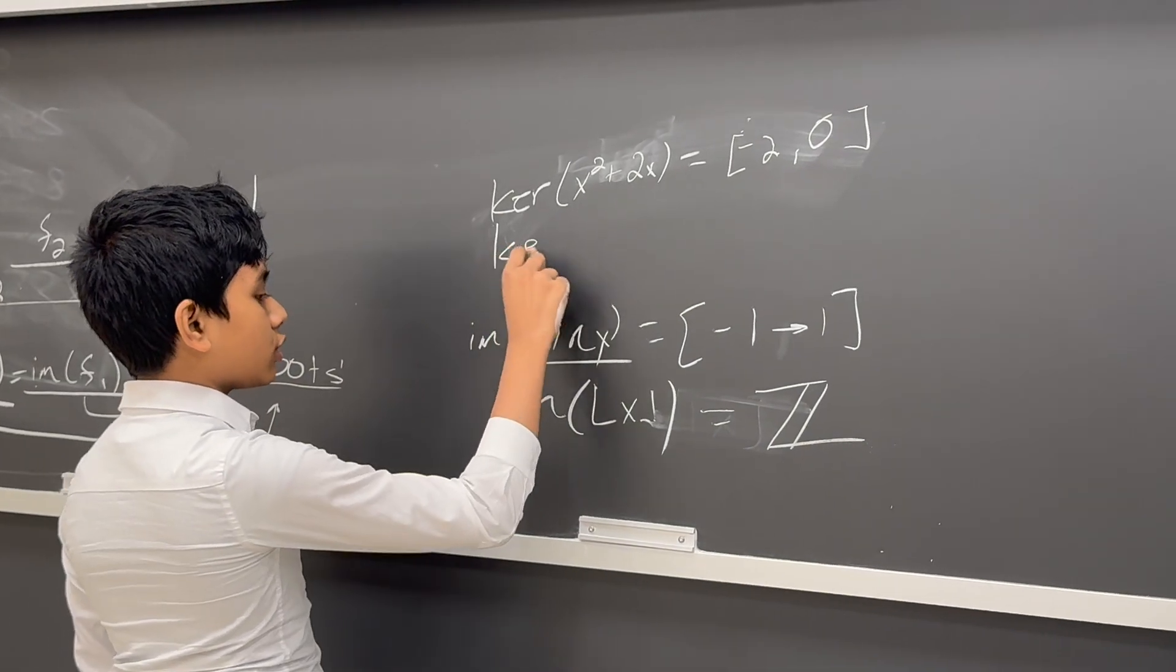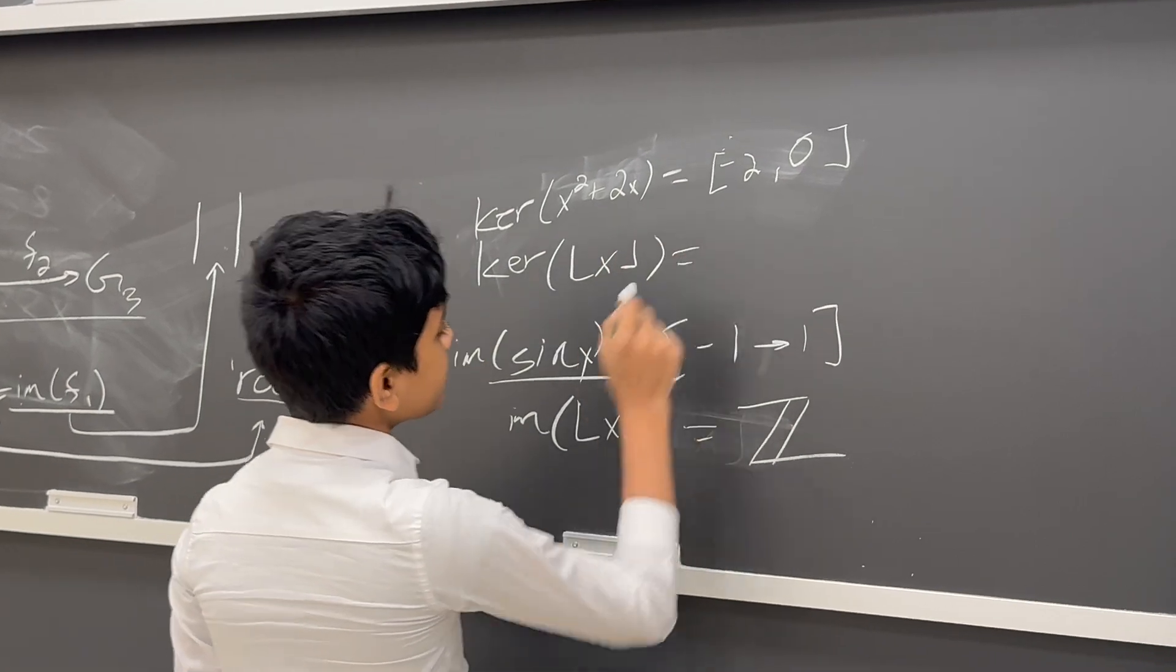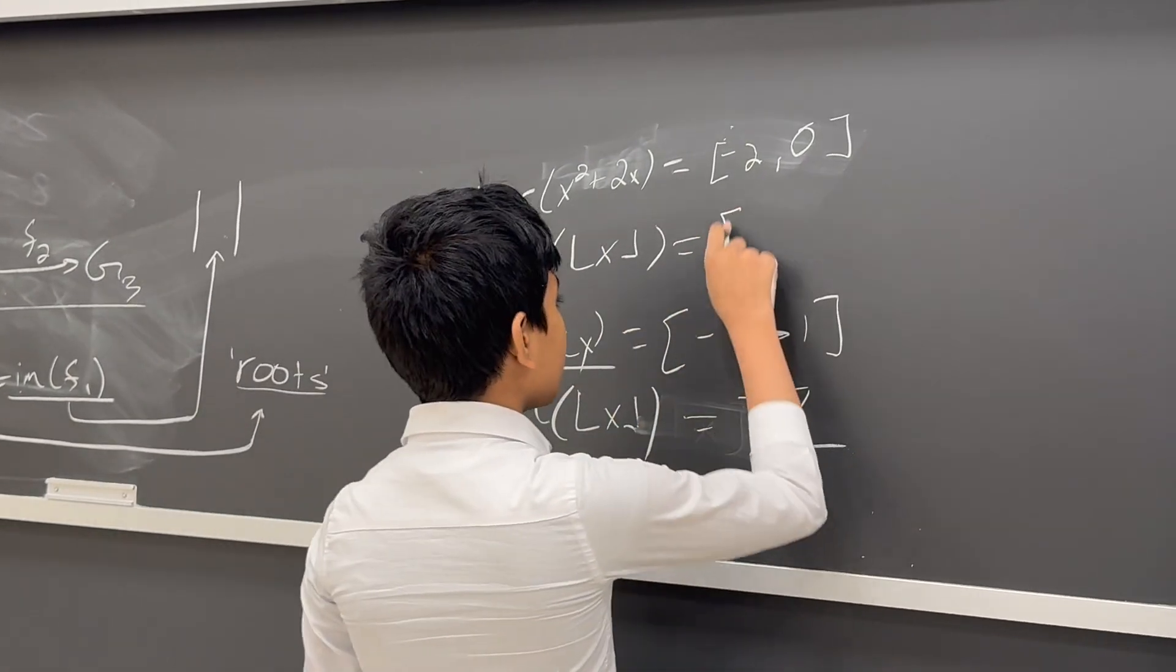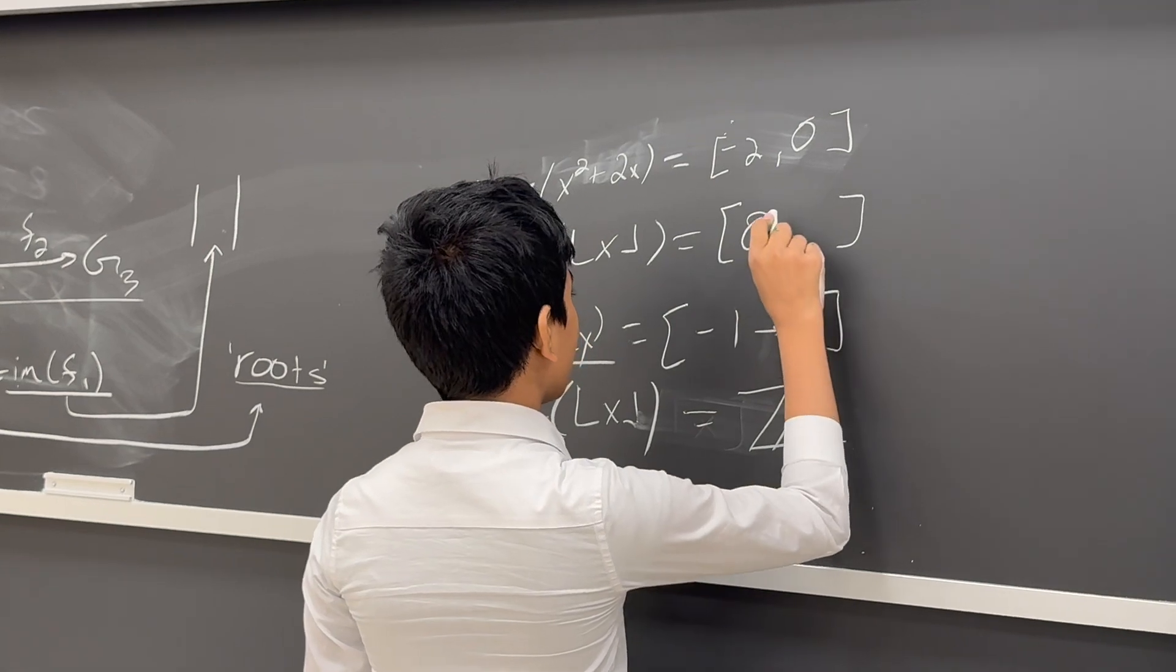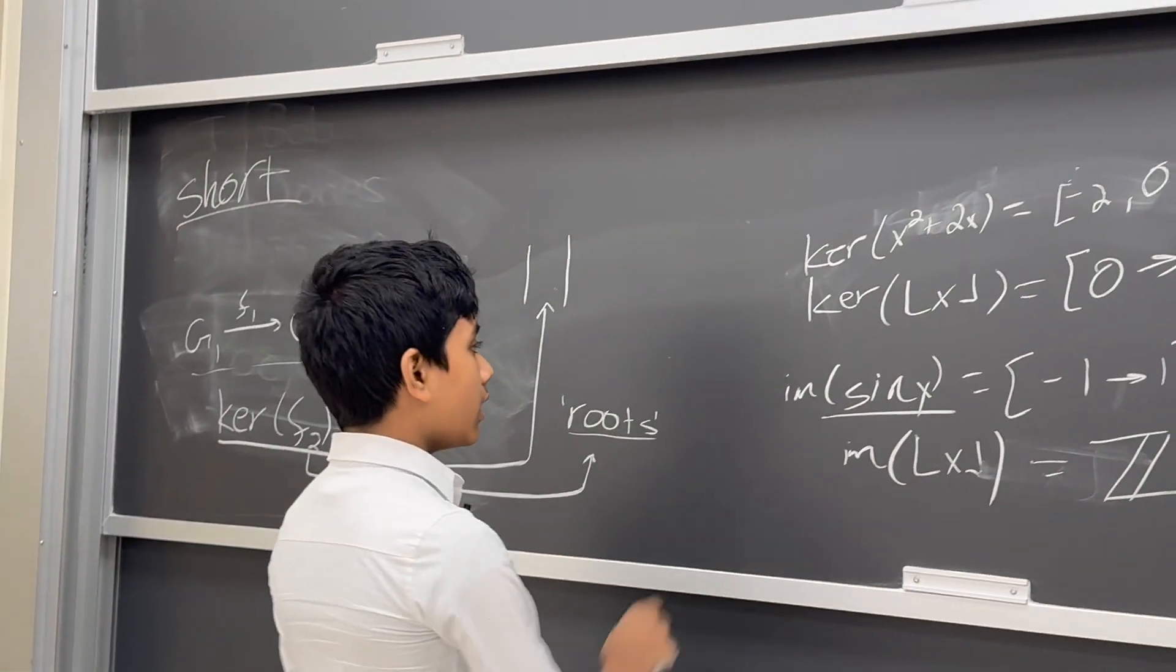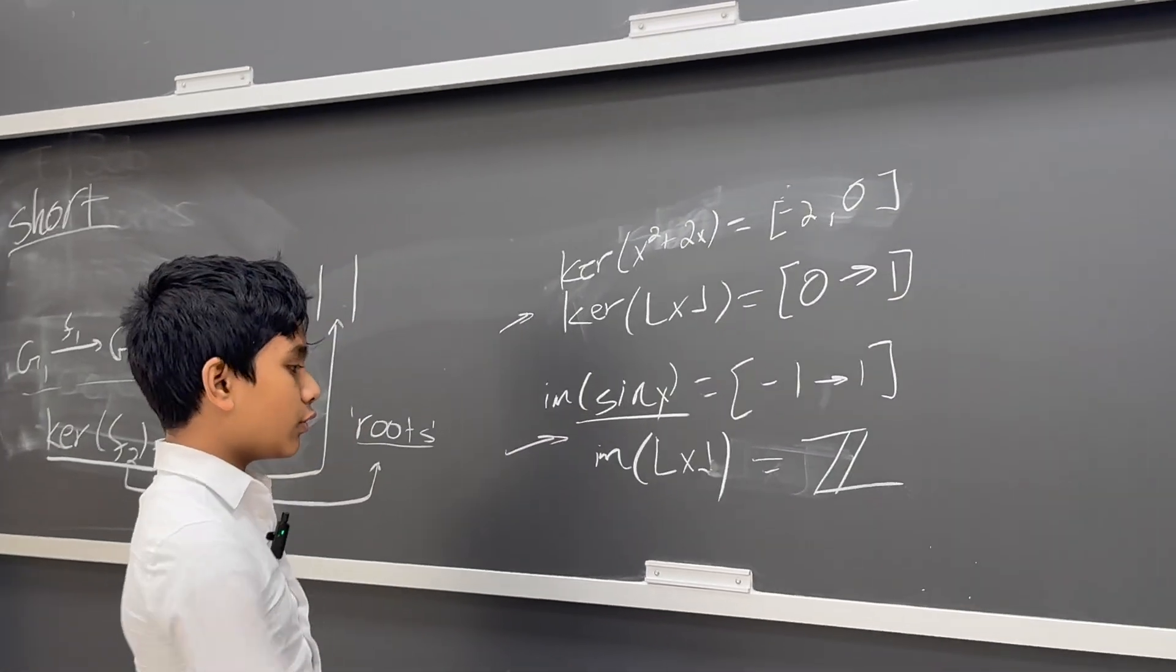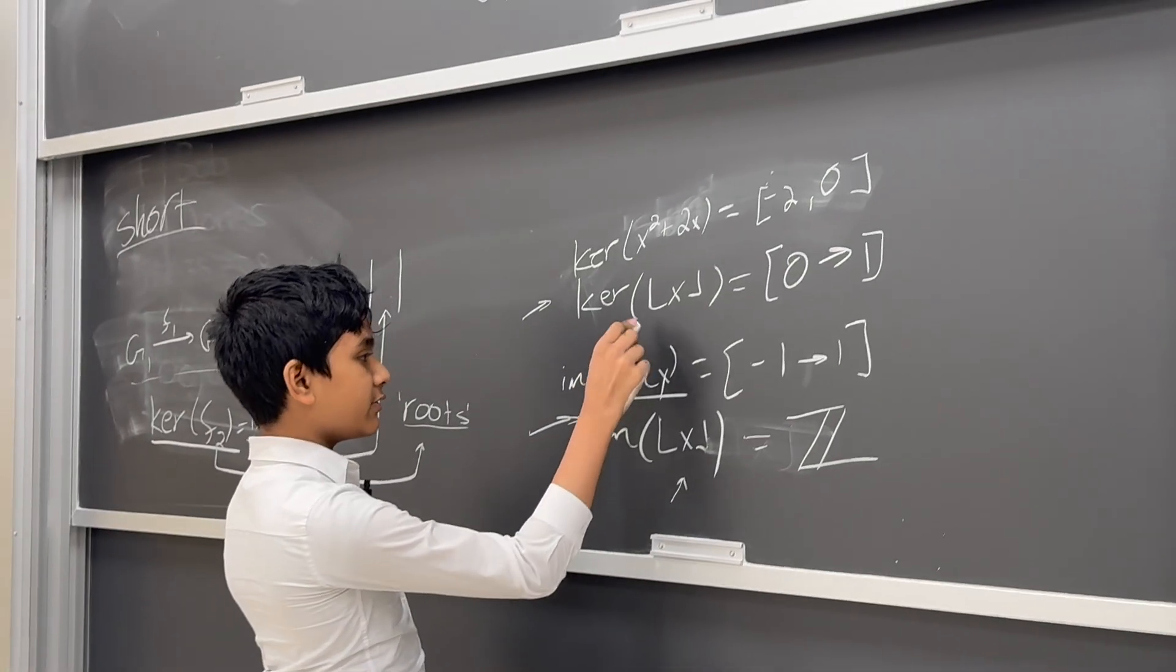So then, what would be the kernel of something like the floor of x? Well, it's just everything from 0 to 1. So these are just simplified versions of the kernel and the image for just these functions. They can be generalized to pretty much any function between two groups.